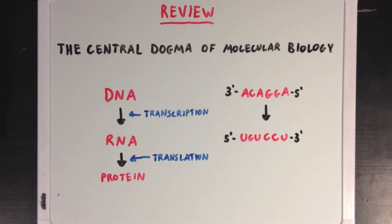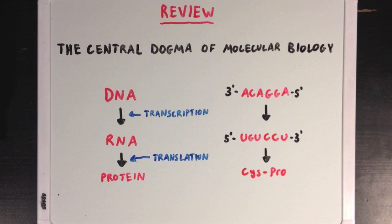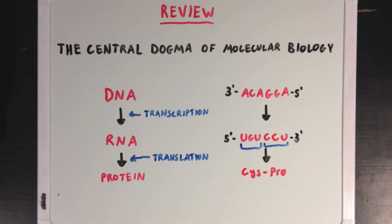Next, our RNA will be used to generate protein through translation. Remember that during this process, RNA nucleotides are read in groups of three, called codons, in order to generate corresponding amino acids.